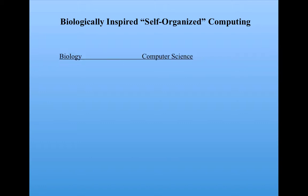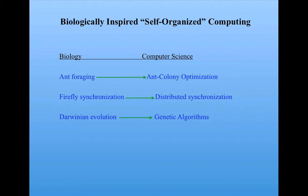And we've seen some of these. We've seen genetic algorithms, which were inspired by Darwinian evolution. Ant foraging has inspired a set of algorithms called ant colony optimization that have been used for things like telecommunications routing. Firefly synchronization and other related synchronization methods in biology have inspired distributed synchronization methods in computers and networks.